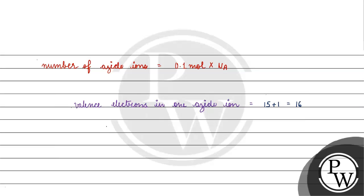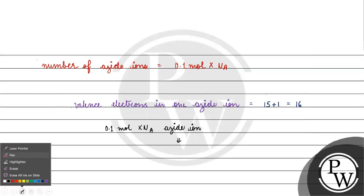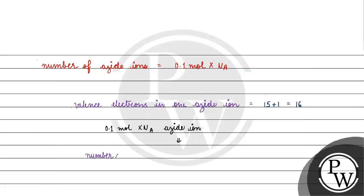We have 0.1 mole into Avogadro number azide ions, right? So this number of valence electrons, how much will be? Number of valence electrons will be equals to 16 into 0.1 into NA, 1.6 into NA.